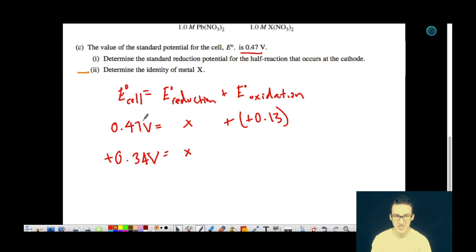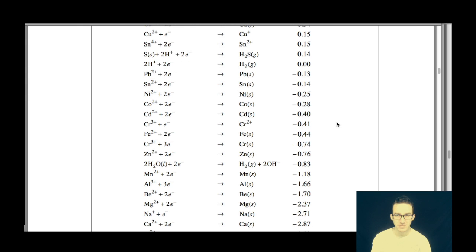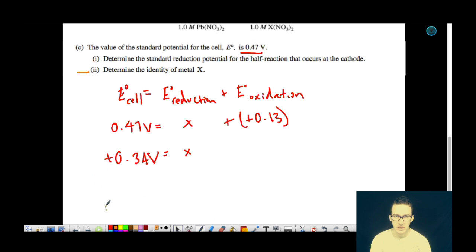Part two here of this question then asks us to determine the identity of metal X. Well, if we know that the reduction potential is a positive 0.34 volts, you would just have to go back to your reduction potential list and find the species that has a reduction potential of positive 0.34 volts, which we determine here to be copper. So the identity of metal X is copper. And again, this is an old AP chemistry free response question. These are questions that you should still anticipate having to answer. Just be prepared that they are going to provide you with the reduction potentials that you need to answer the question within the question itself instead of referencing a giant chart.